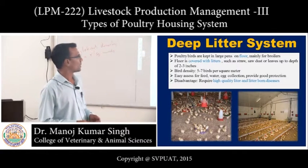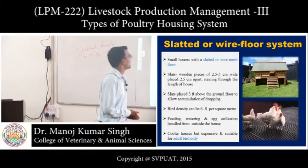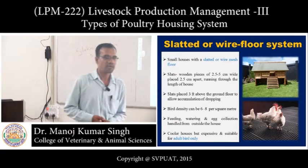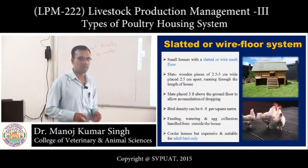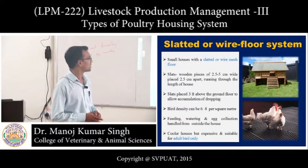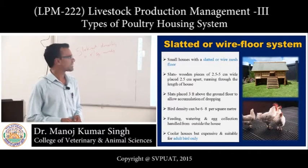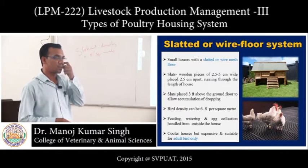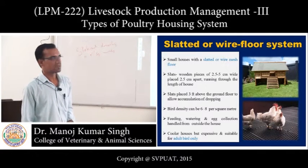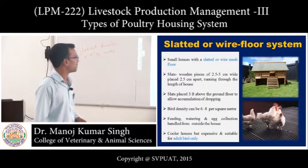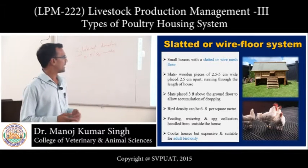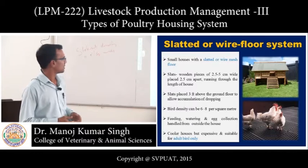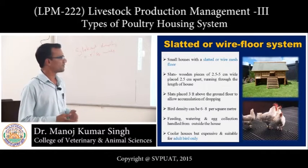Disadvantages of deep litter: it requires quality litter, and litter-borne diseases are more common. The next is the slatted or wire floor system. In this system, small houses with slatted or wire mesh floors are used. Slatted wooden pieces of 2.5 to 5 cm width are placed about 2.5 cm apart, running through the length of the house. Slats are placed 3 feet above the ground floor.